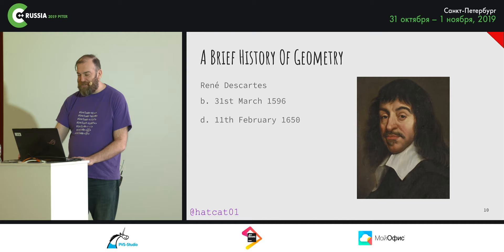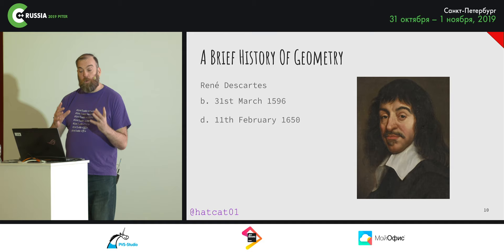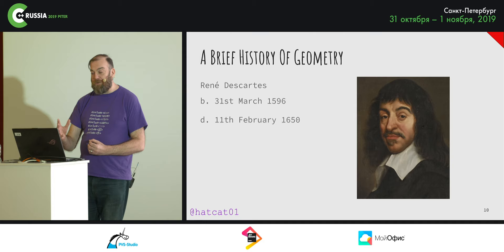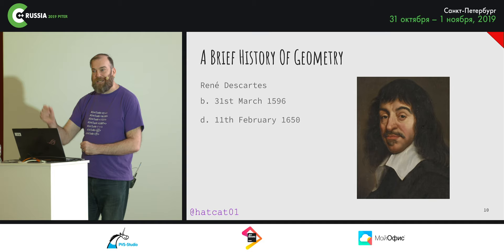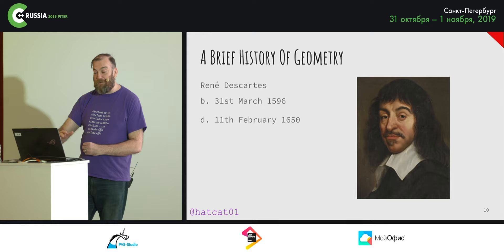Analytical geometry works by introducing a coordinate system and giving every point in the plane a pair of real number coordinates. If this were a film, you would hear some cellos and trombones playing very serious music, as this foreshadows a significant problem with geometry in programming in digital environments — and we'll return to this later.